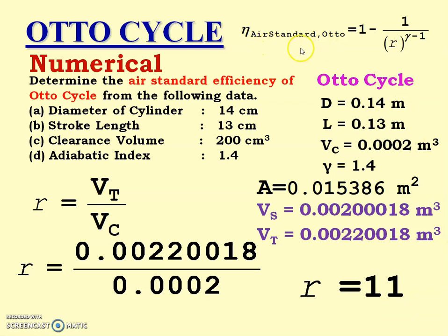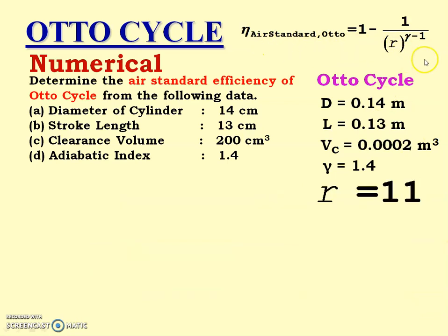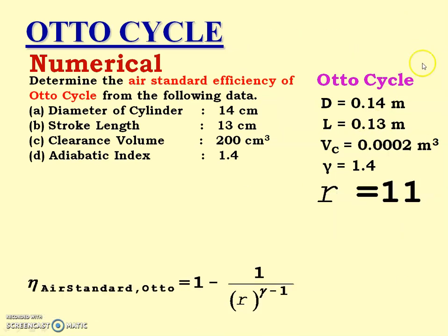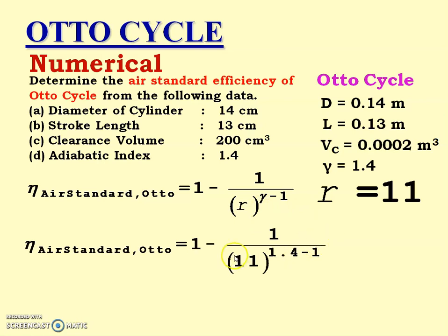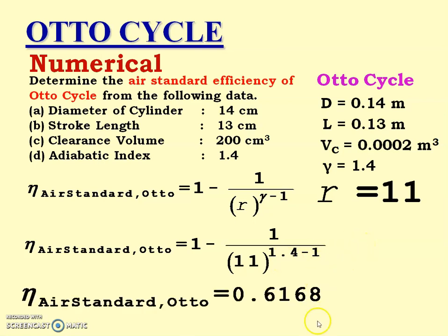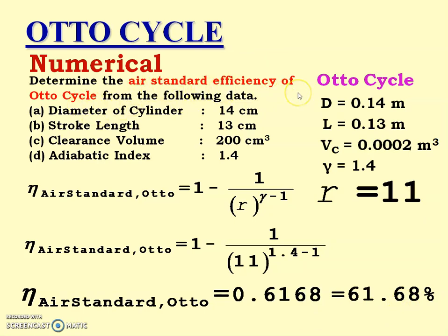Now we calculate the air standard efficiency of the Otto cycle using the equation: 1 minus 1 upon R raised to (gamma minus 1). So: 1 minus 1 upon 11 raised to (1.4 minus 1). The answer is 0.6168, that is 61.68% — this is the air standard efficiency of the Otto cycle.